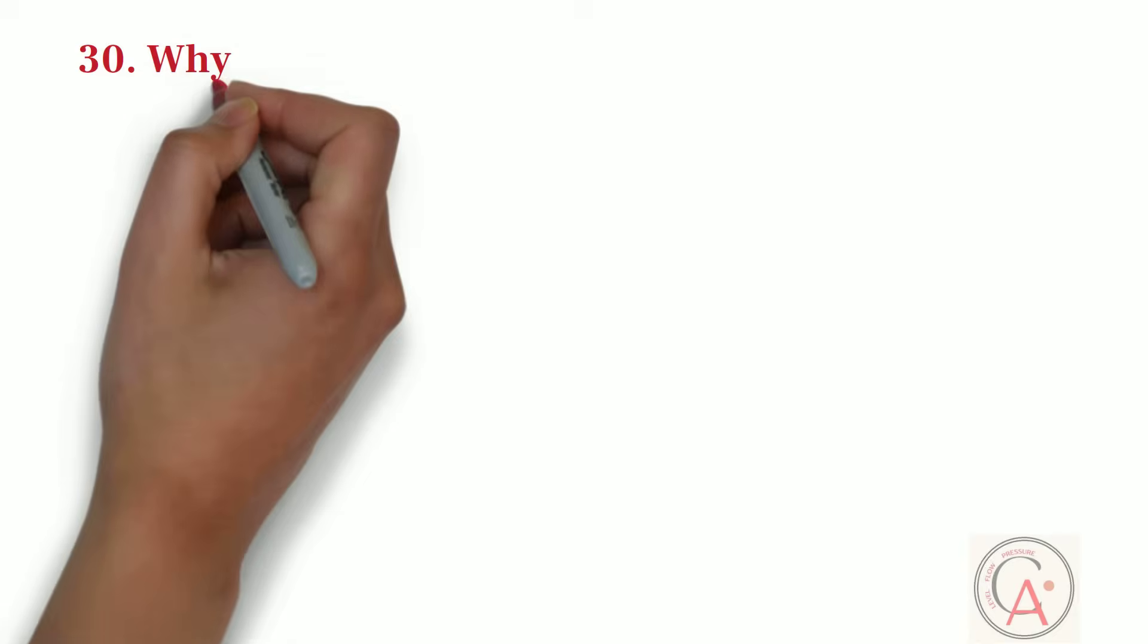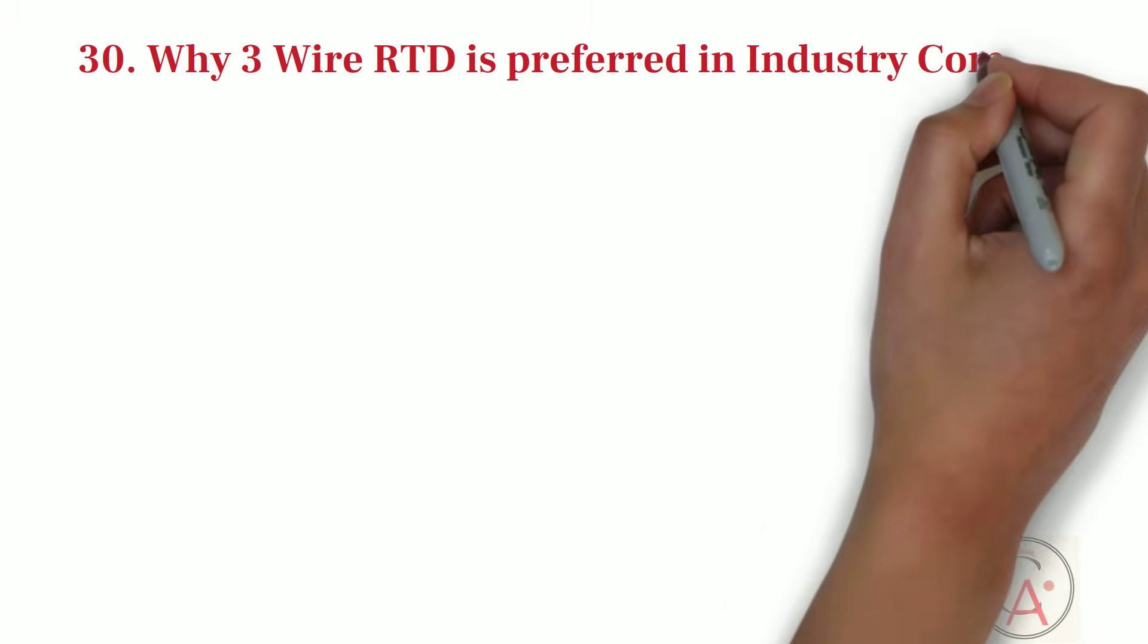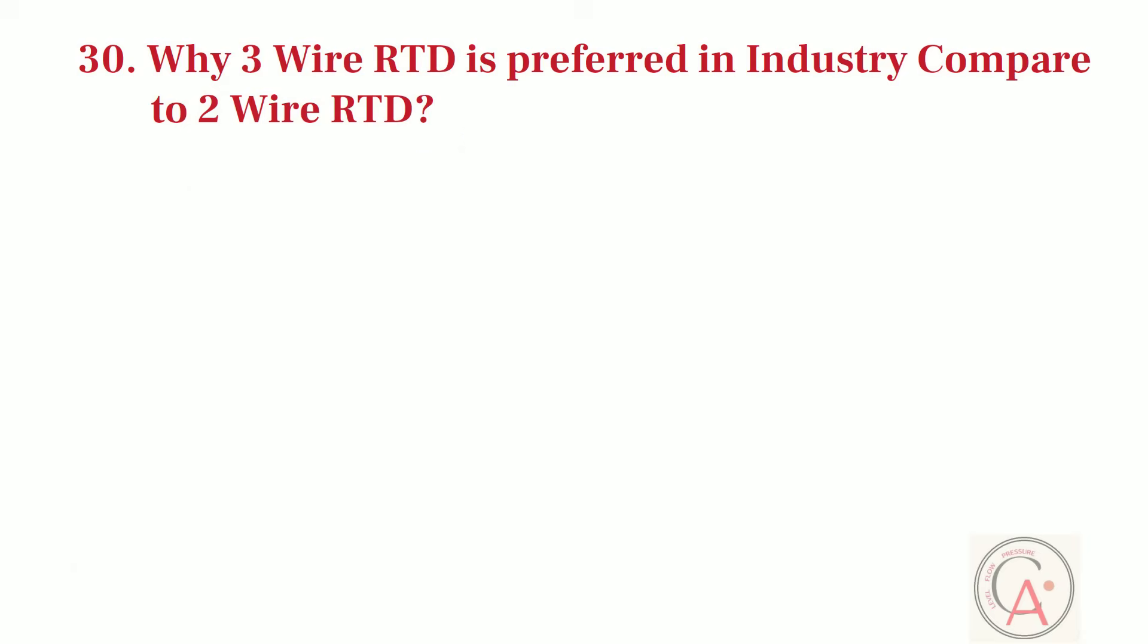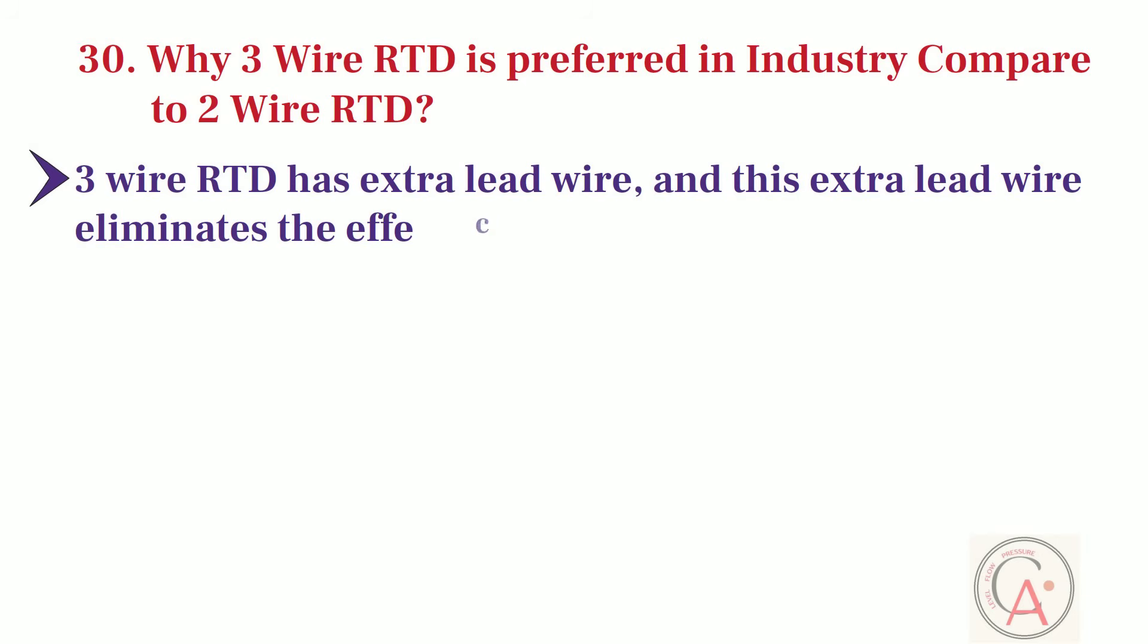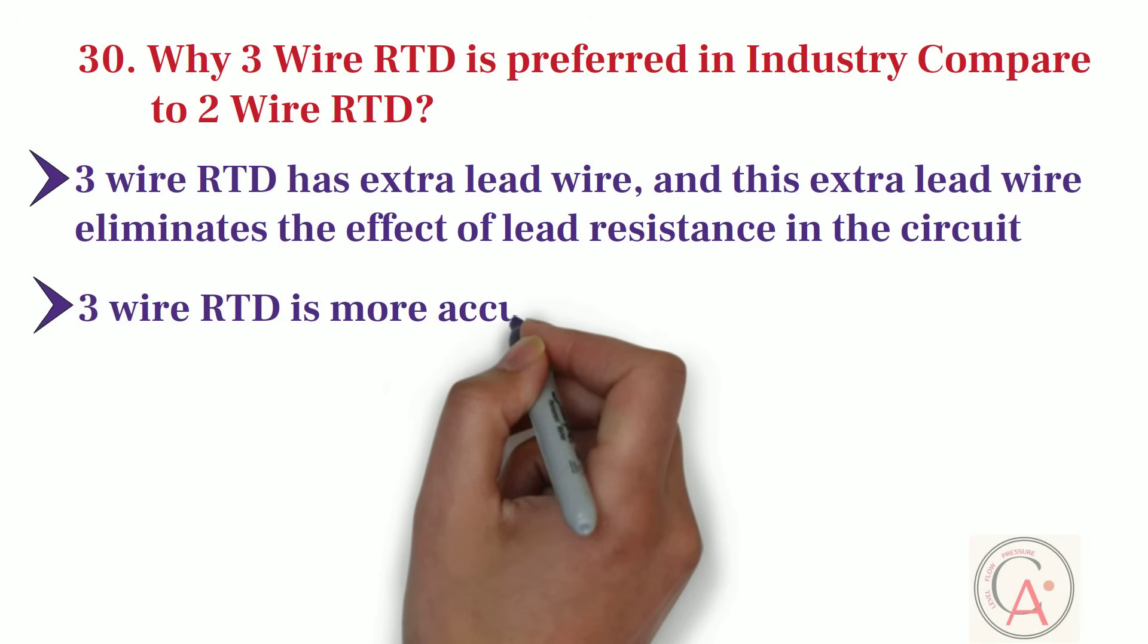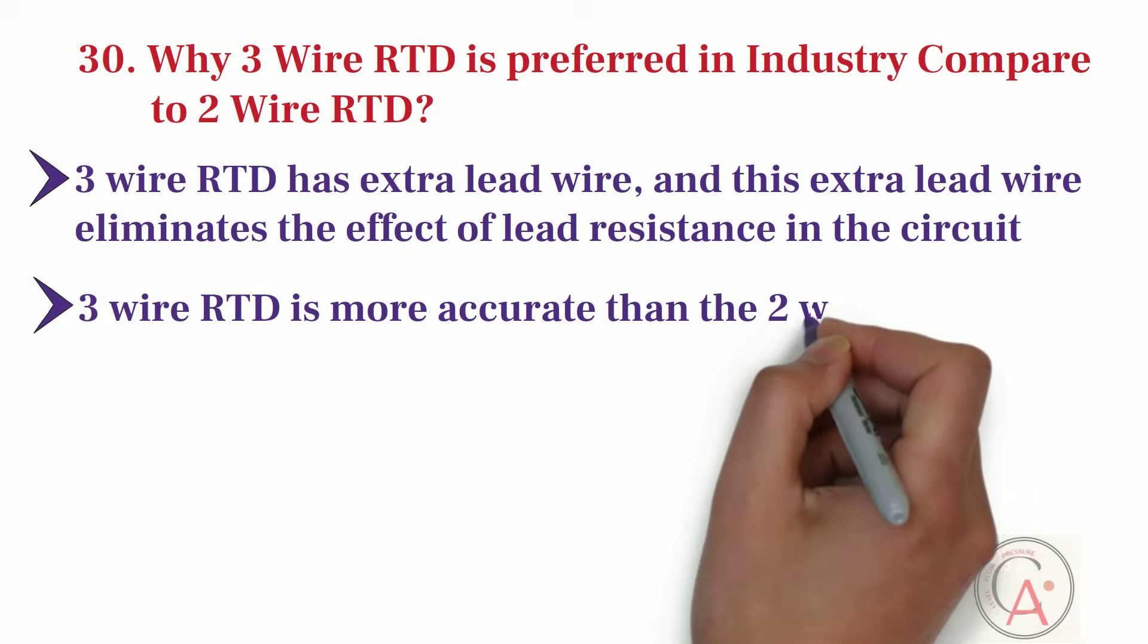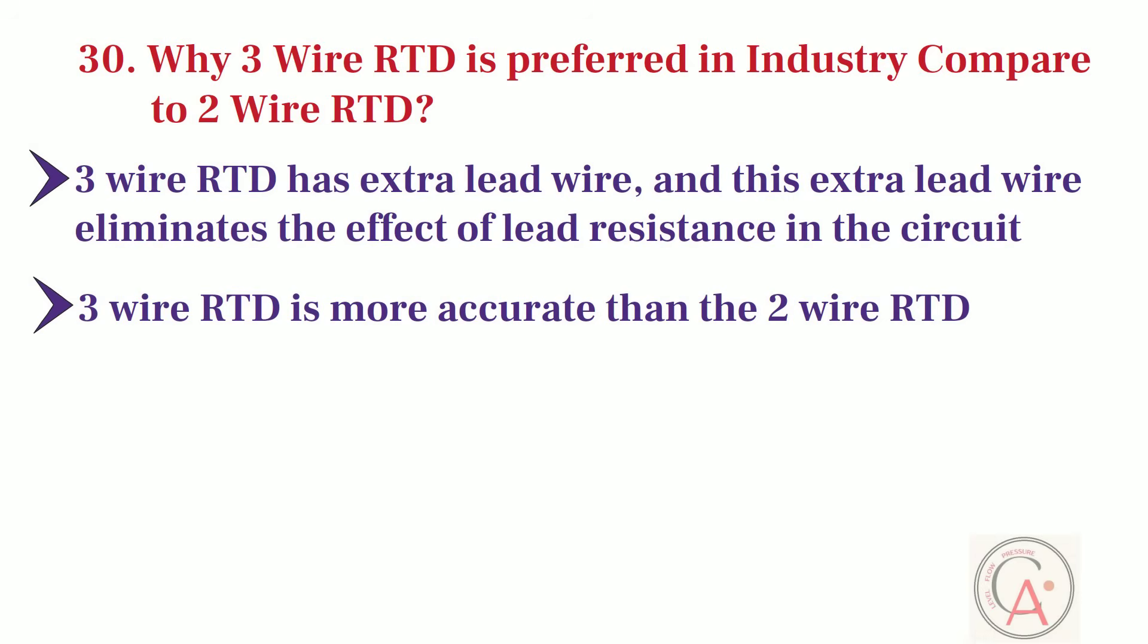Last question is, why three-wire RTD is preferred in industry as compared to two-wire RTD? Three-wire RTD has extra lead wire, and this extra lead wire eliminates the effect of lead resistance in the circuit, which is not possible in two-wire RTD. Because of lead wire compensation feature, three-wire RTD is more accurate than the two-wire RTD. And this is a reason three-wire RTD is preferred in industry compared to two-wire RTD.